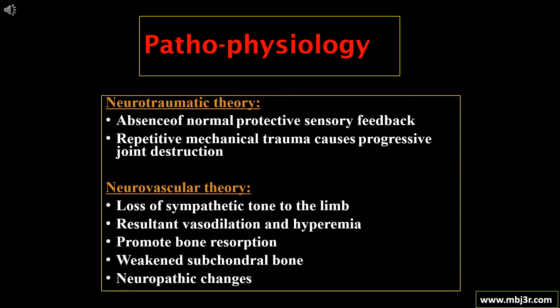Regarding the pathophysiology of neuropathic arthropathy, there are two theories: the neurotraumatic theory and the neurovascular theory. According to the neurotraumatic theory, absence of normal protective sensory feedback results in repetitive mechanical trauma causing progressive joint destruction. According to the neurovascular theory, loss of sympathetic tone to the limb results in vasodilatation and hyperemia, promoting bone resorption, which weakens subchondral bone and produces neuropathic changes.